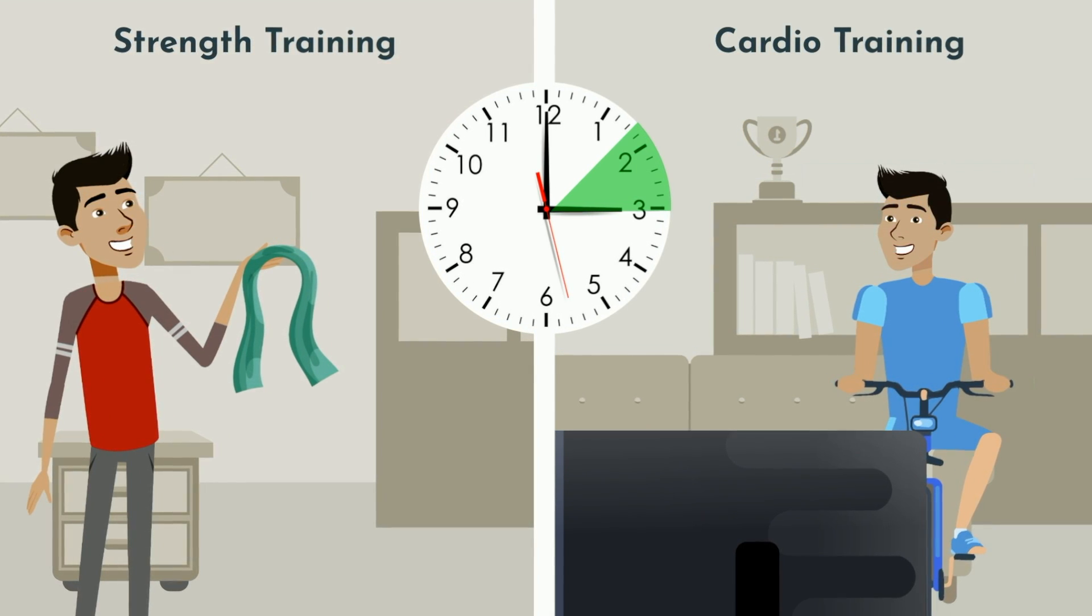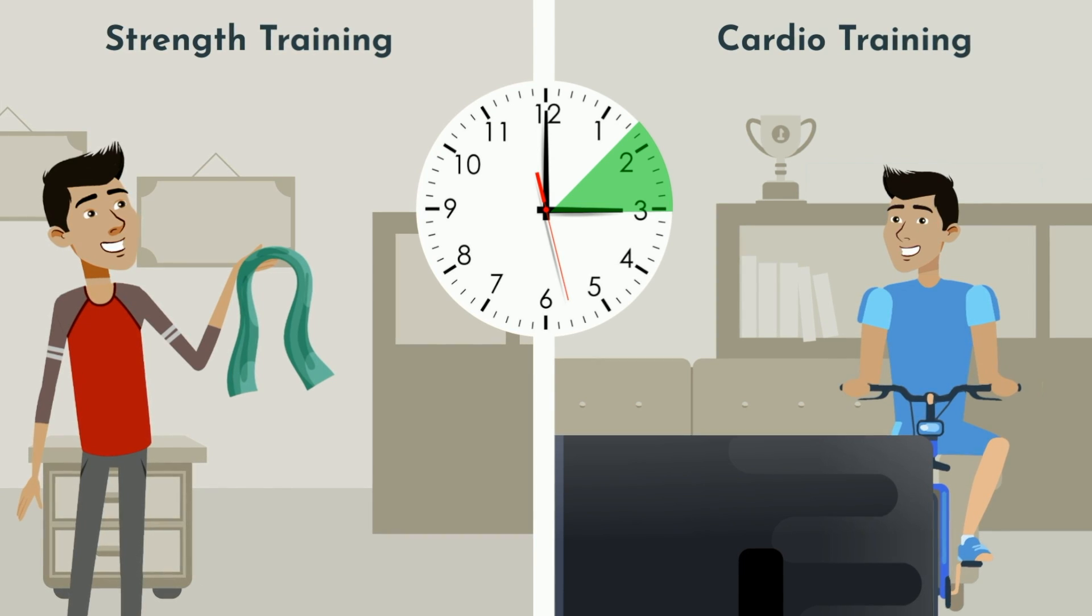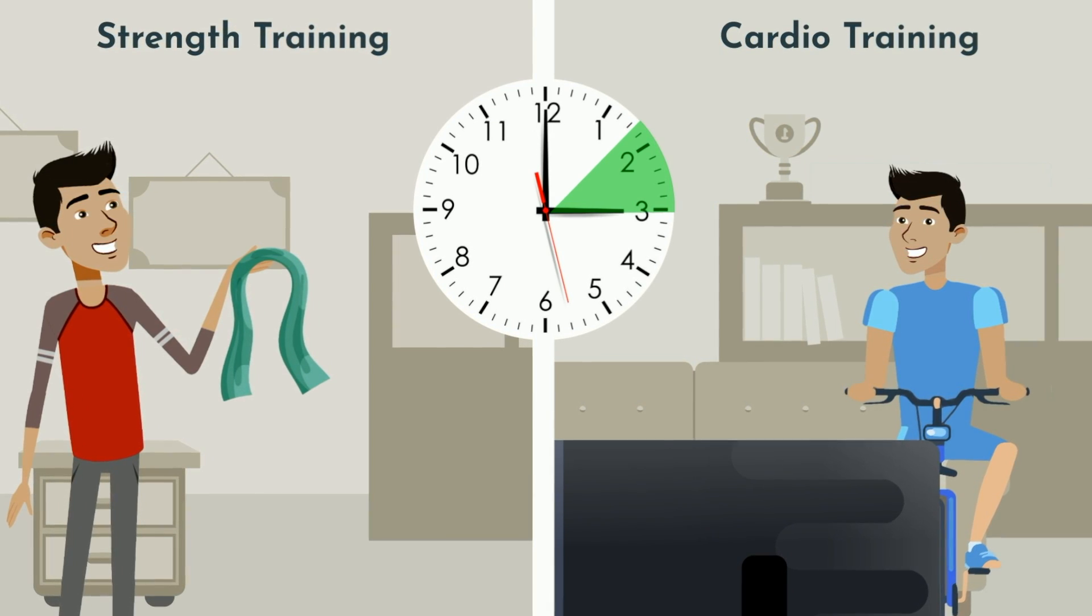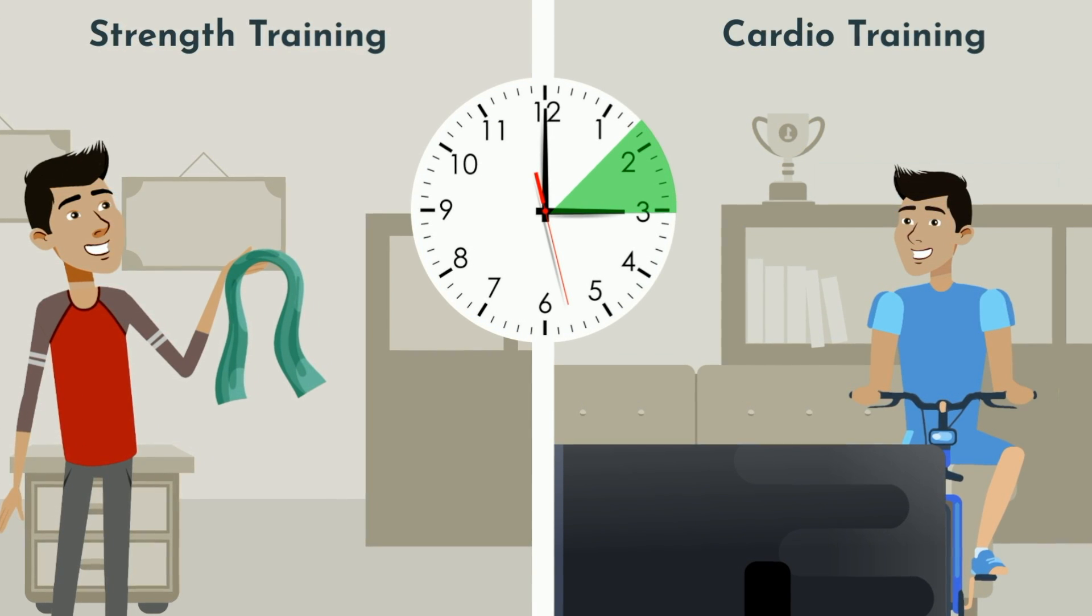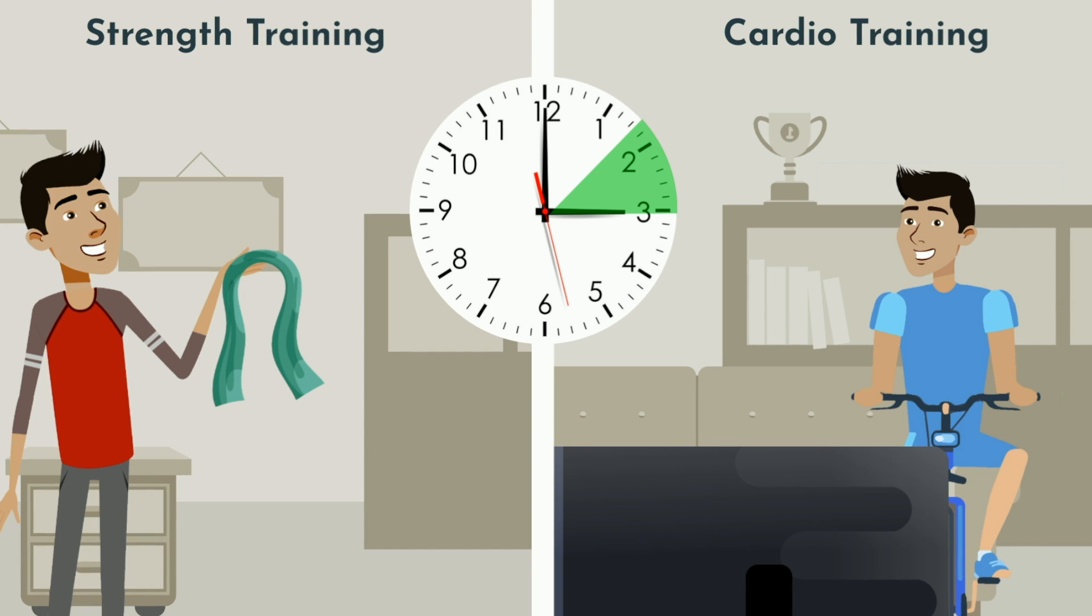I alternate strength training days using bodyweight and bands with cardio days on my Wahoo Kicker Smart Trainer with Zwift. Setup, warmup, workout, takedown, and showering takes me usually 90 minutes or so.